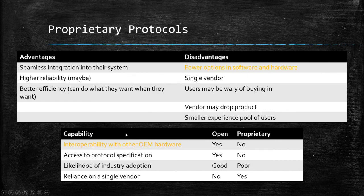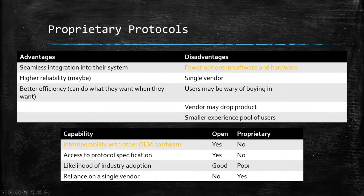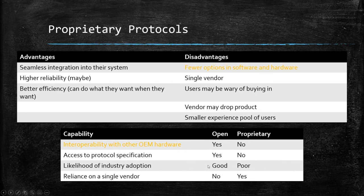Comparing capability: interoperability with other OEM hardware — open protocols: yes, bring it on. Proprietary: no, if we don't make it, it's not going to work in our system. Access to the specification — open protocol: you can get it, it doesn't cost anything. Proprietary: no, you've got to pay for it. Likelihood of industry adoption — open: free, makes sense. Proprietary: poor, but if they do buy in, you're going to make some good money. Reliance on a single vendor — open protocol: no, you can pick whatever vendor you want, Honeywell or otherwise. Proprietary: you're hooked — you buy their system, all their stuff is their stuff.